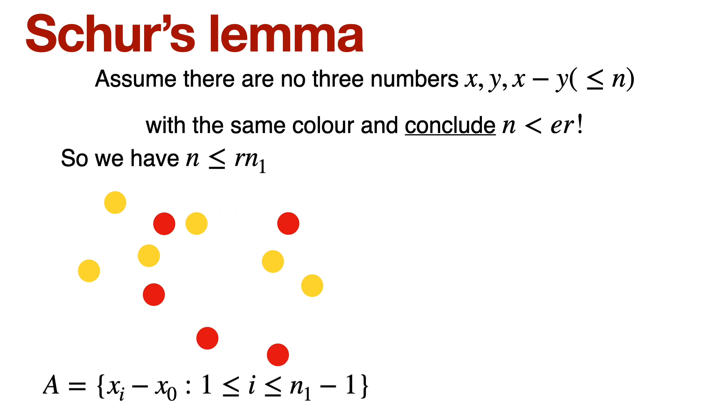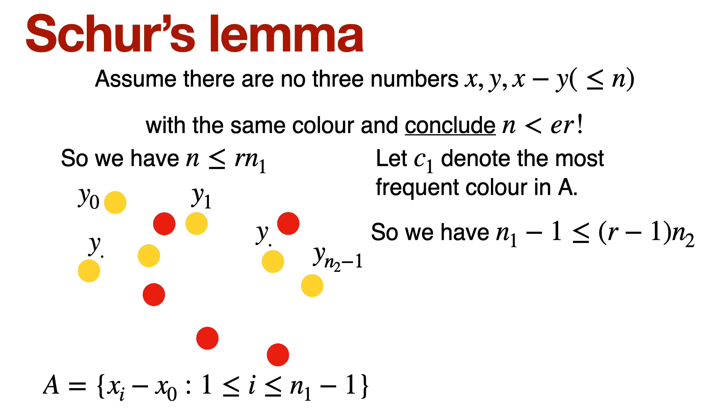So we remove, delete all the blue colors, and we only consider the remaining color. So therefore now what we have left with is a new set labeled xi minus x0. All these elements here on the screen are xi minus x0, and they are all colored by remaining colors, remaining r minus 1 colors. They are not colored by color blue, okay? All right, now we wonder what is the most frequent color again? So let C1 denote the most frequent color in A, okay? And let's say the numbers are all the way from y0 to yn2 minus 1. In other words, there are totally n2 such numbers. We are again back to the same track. There are r minus 1 colors, each color class can have at most n2 elements in it. So the total number of elements in a can be at most r minus 1 into n2. So therefore, n1 minus 1 is at most r minus 1 into n2.